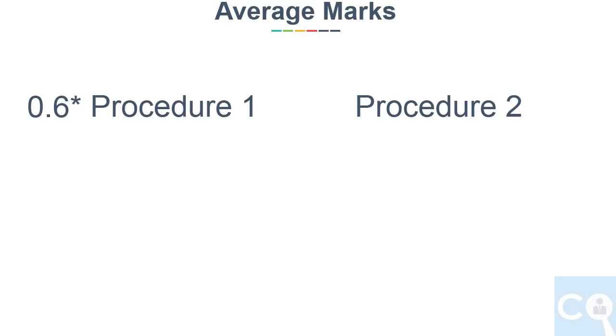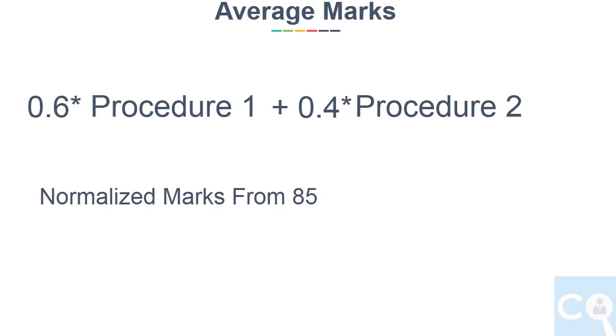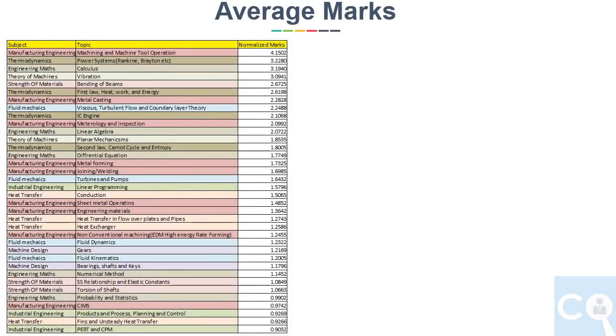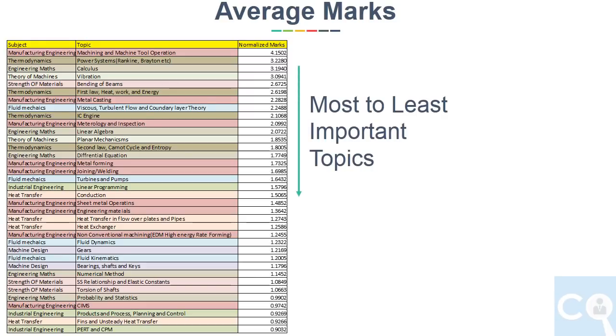Now take the average marks from both procedures, weighting the first procedure at 60% and the second at 40%, since we trust the first procedure more. This gives us a normalized mark for each topic out of 85 marks. Arranging this new average from highest to lowest gives us the most to least important topics.